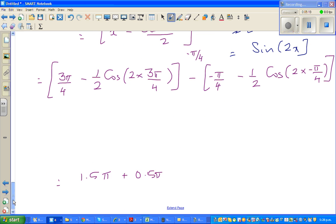So this is 0.75 pi minus half of cos, this is 3 pi by 2, which is 1.5 pi. Minus, this is minus pi by 4.